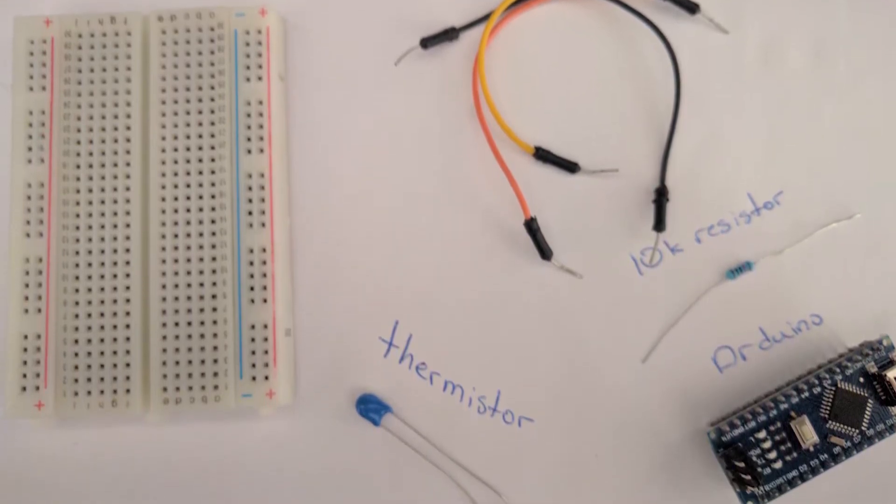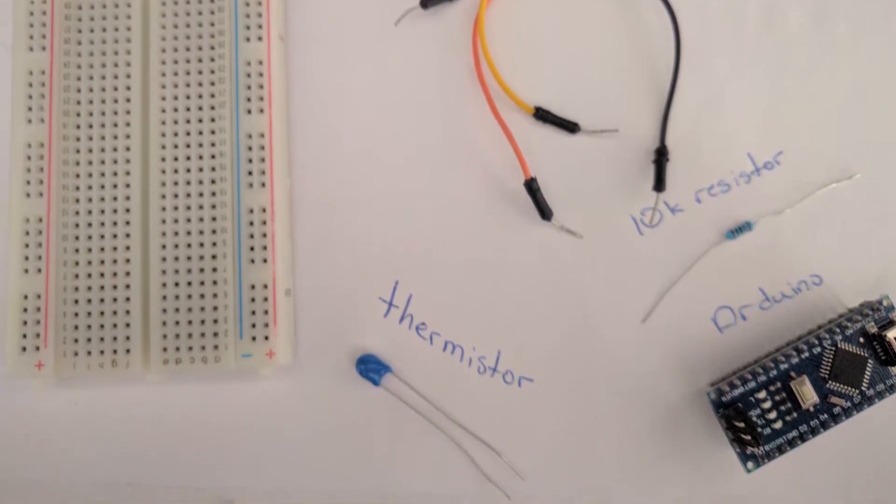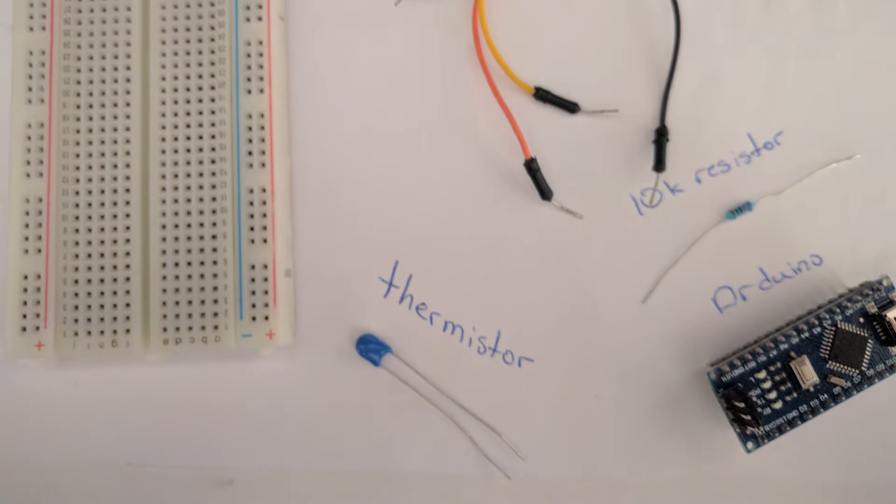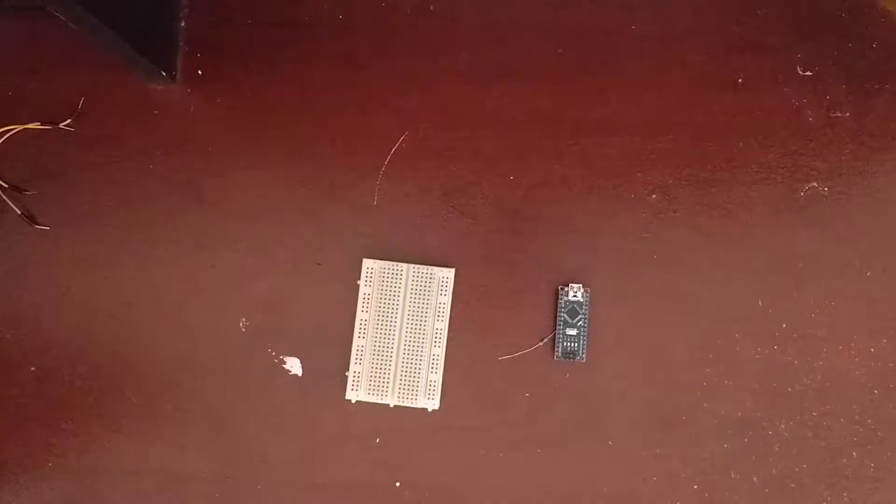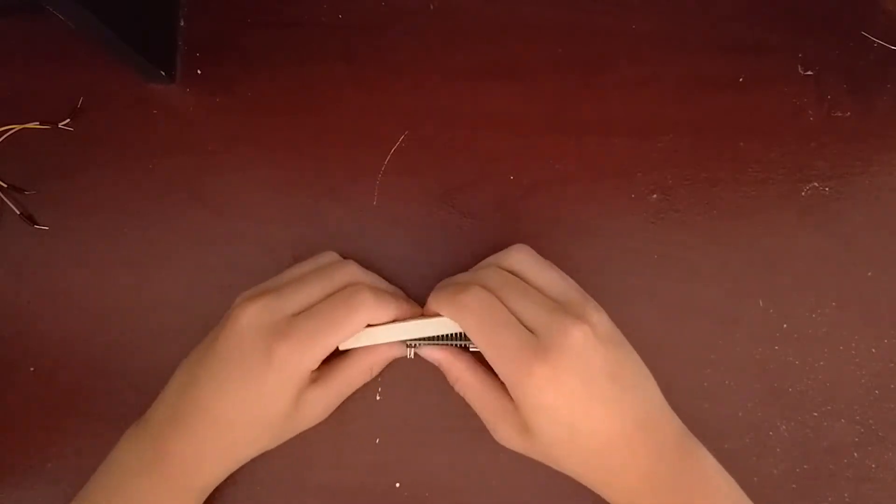You can pick any volume but it is recommended to have a volume close to the one of the thermistor. You will also need the thermistor and finally an Arduino. First we'll need to insert the Arduino nano onto the breadboard.